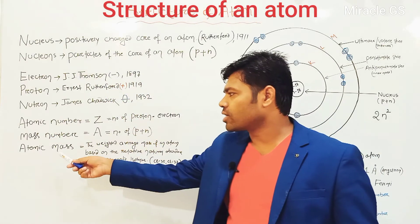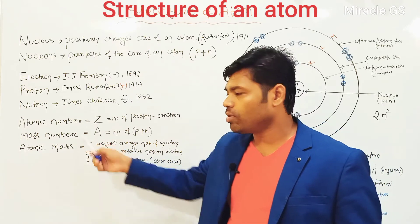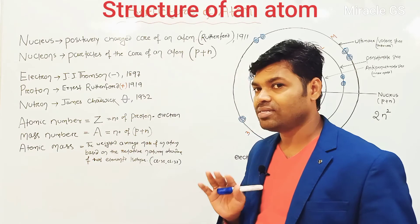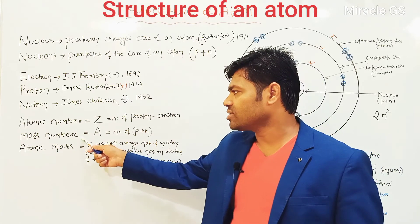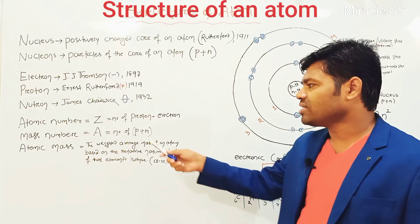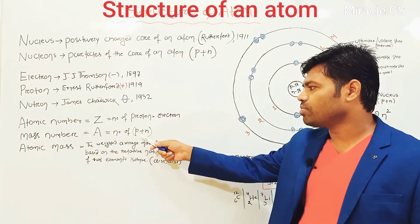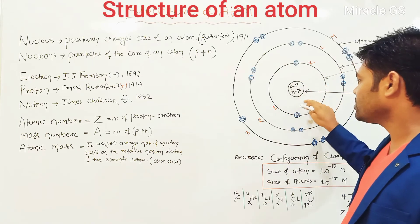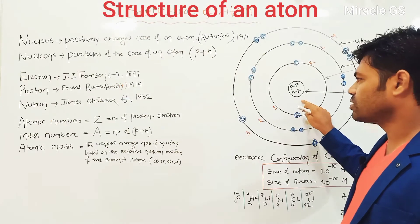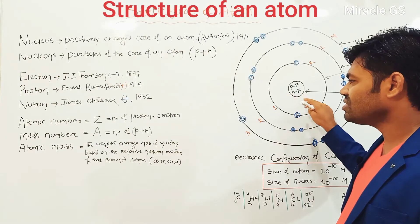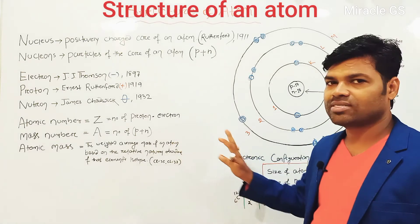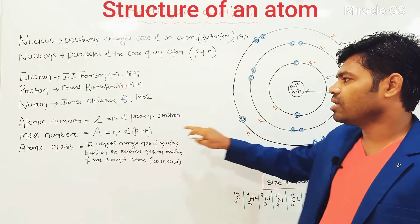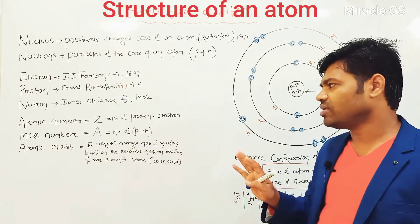Another concept is called atomic mass. Atomic mass is different from mass number. Mass number is the number of proton plus number of neutron. The mass of the atom is equal to the mass of the nucleus. The number of proton plus neutron is the mass number A.